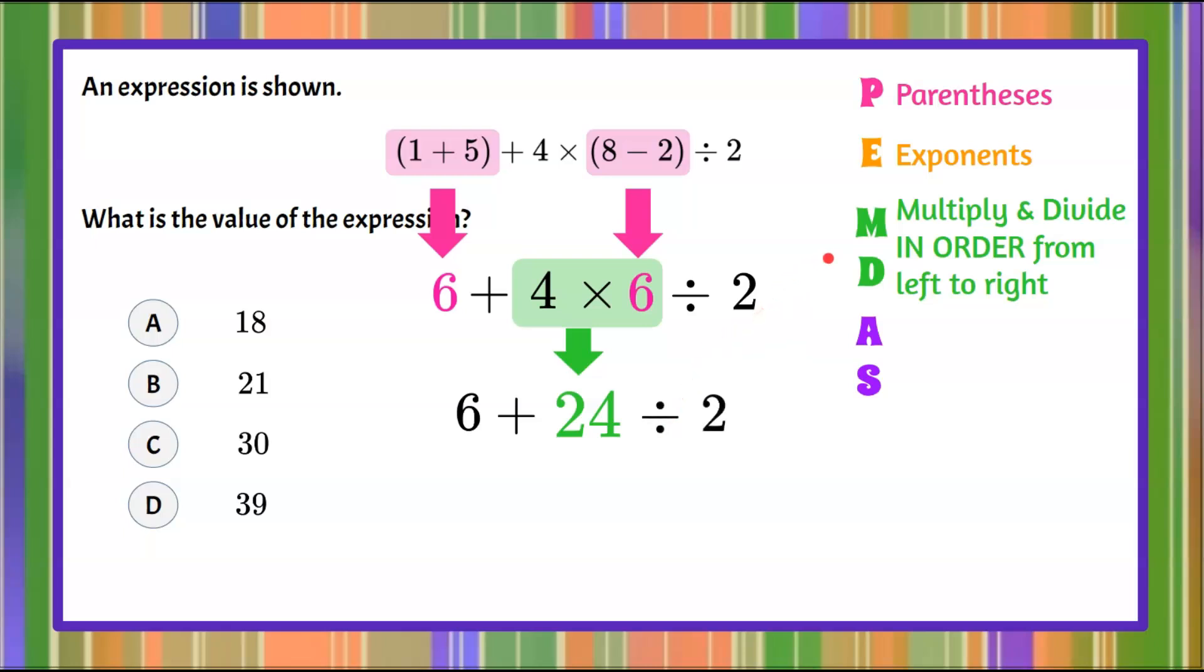So we're not done with our MD because I can see that I still have a division sign. We're going to bring down our 6 add and then our quotient, 24 divided by 2 is 12.